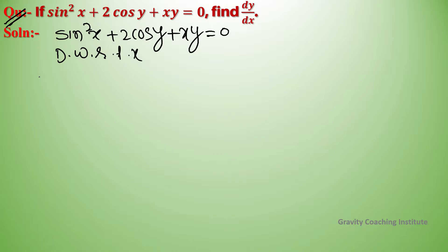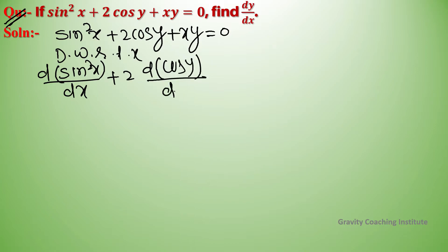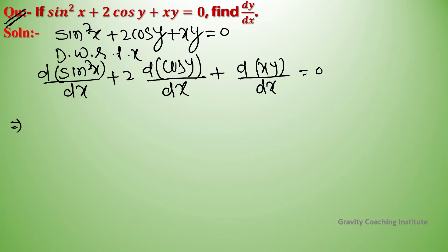Differentiation of sin²x plus 2 into differentiation of cos(y) plus differentiation of xy equals 0. First, the chain rule will be used — for sin²x, using the x^n formula gives 2sin(x) to the power 1, and then differentiation of sin(x) gives cos(x).